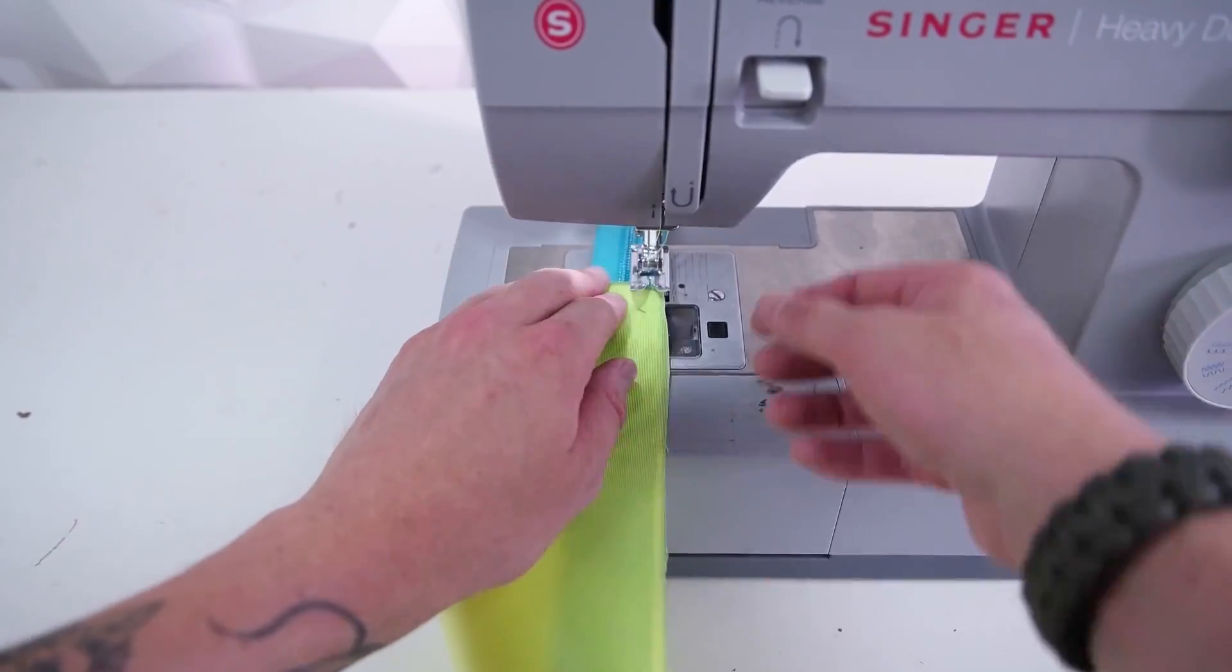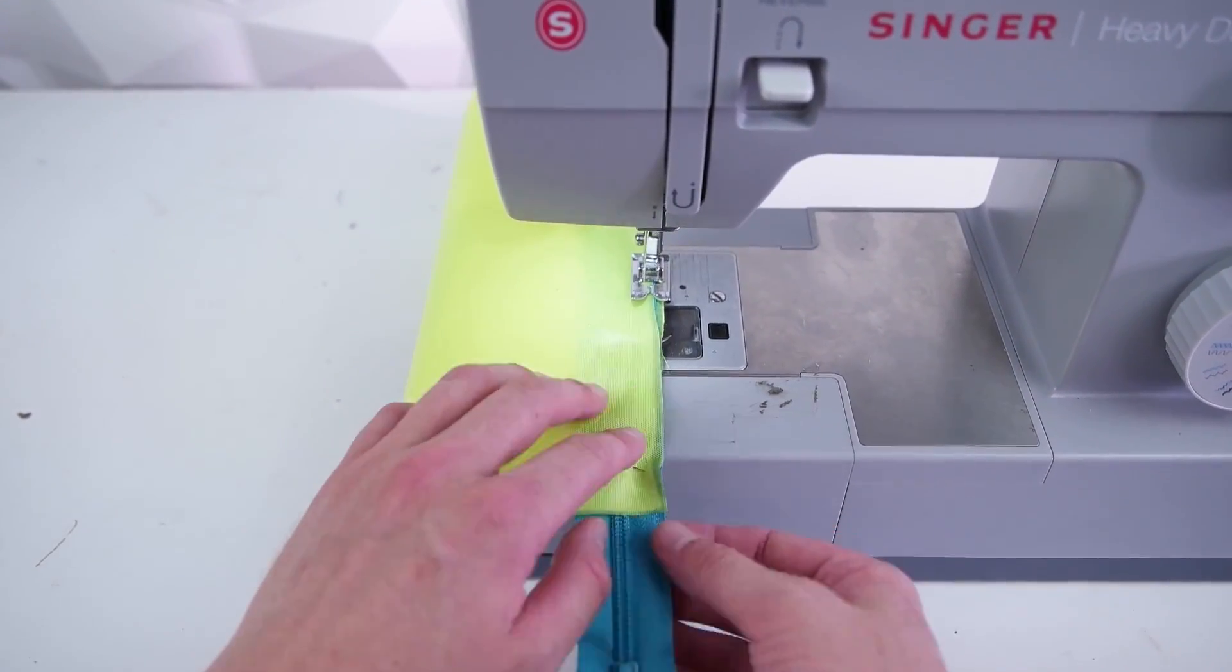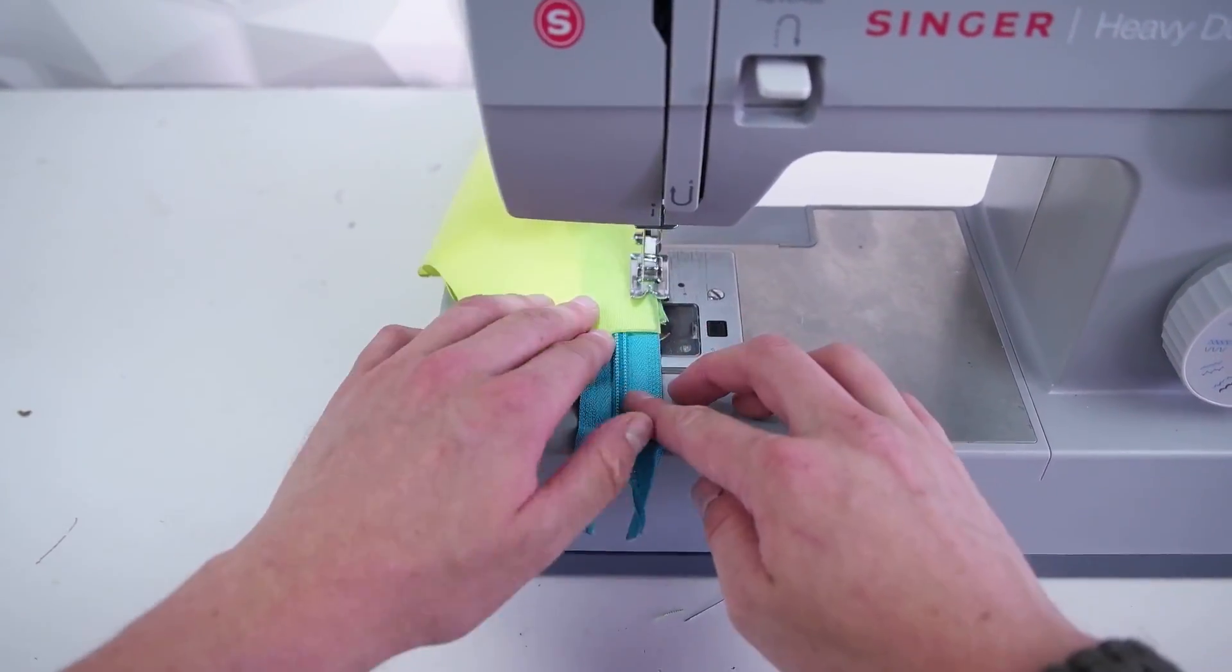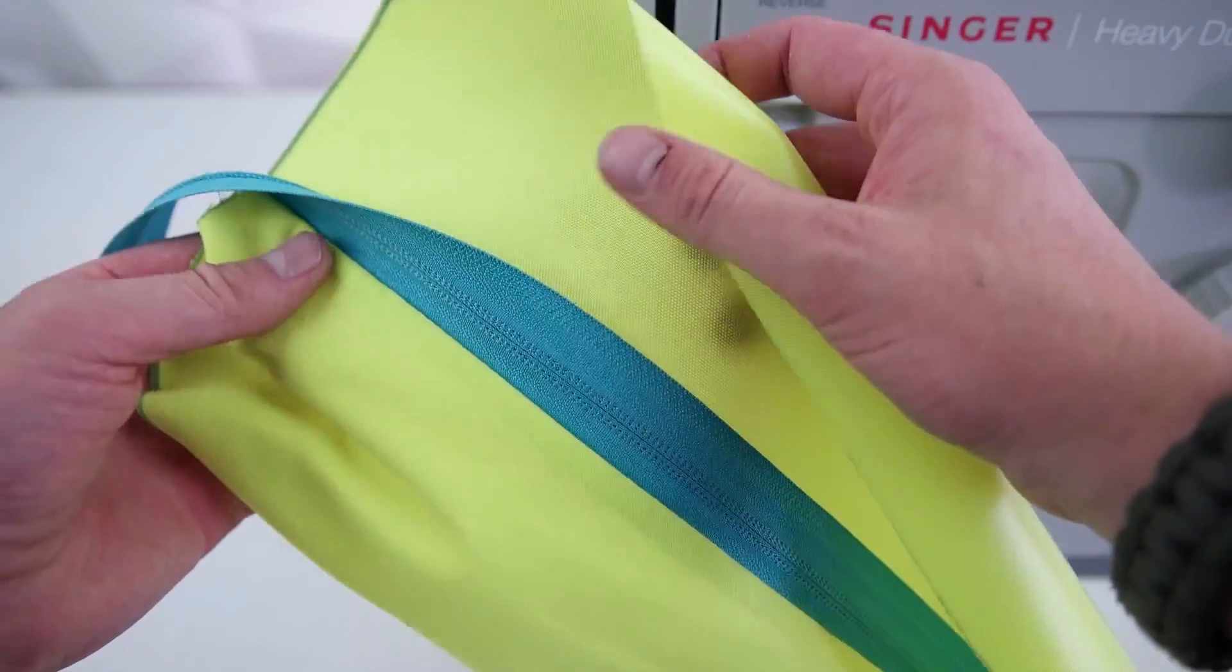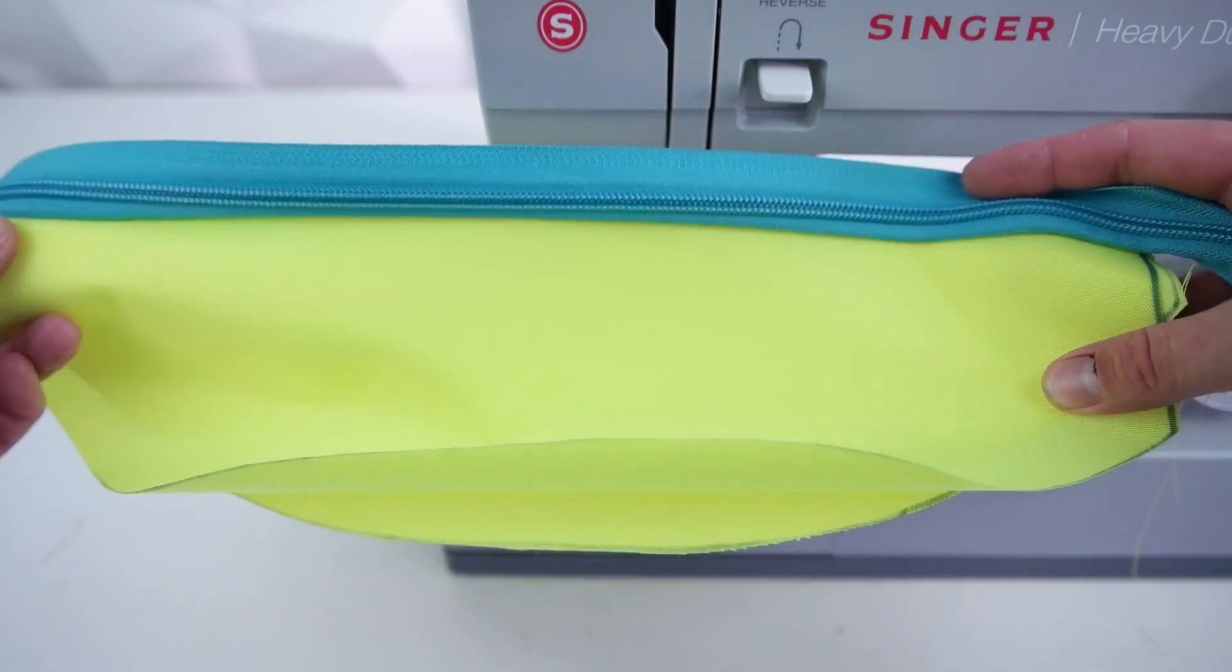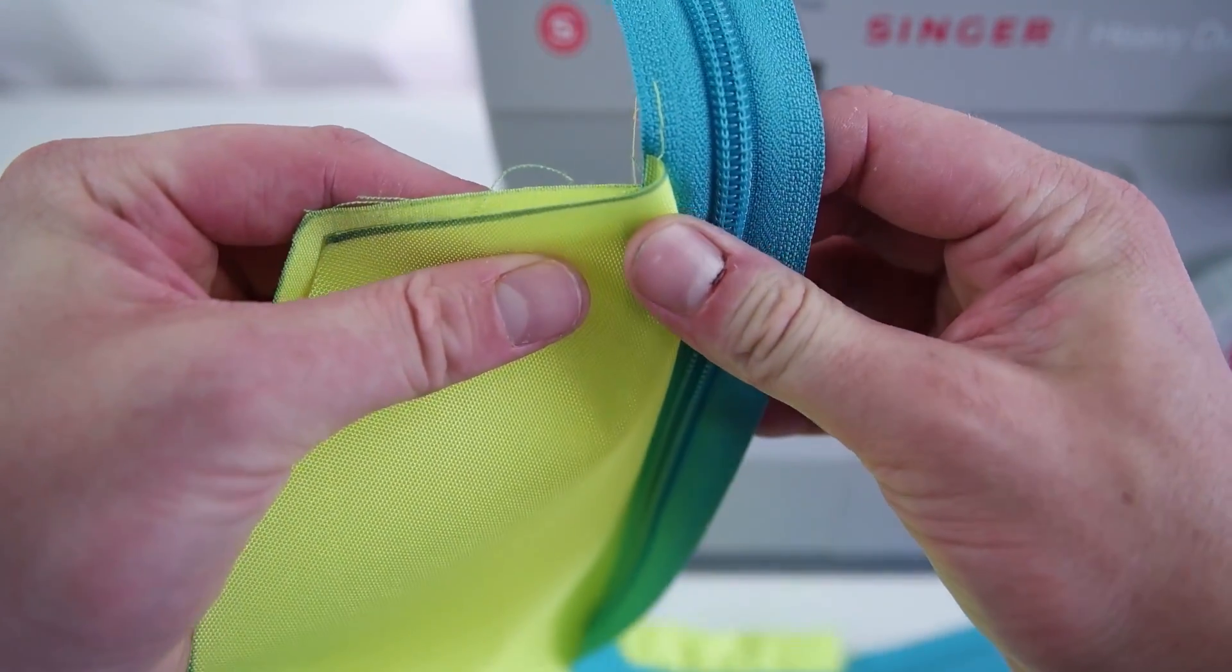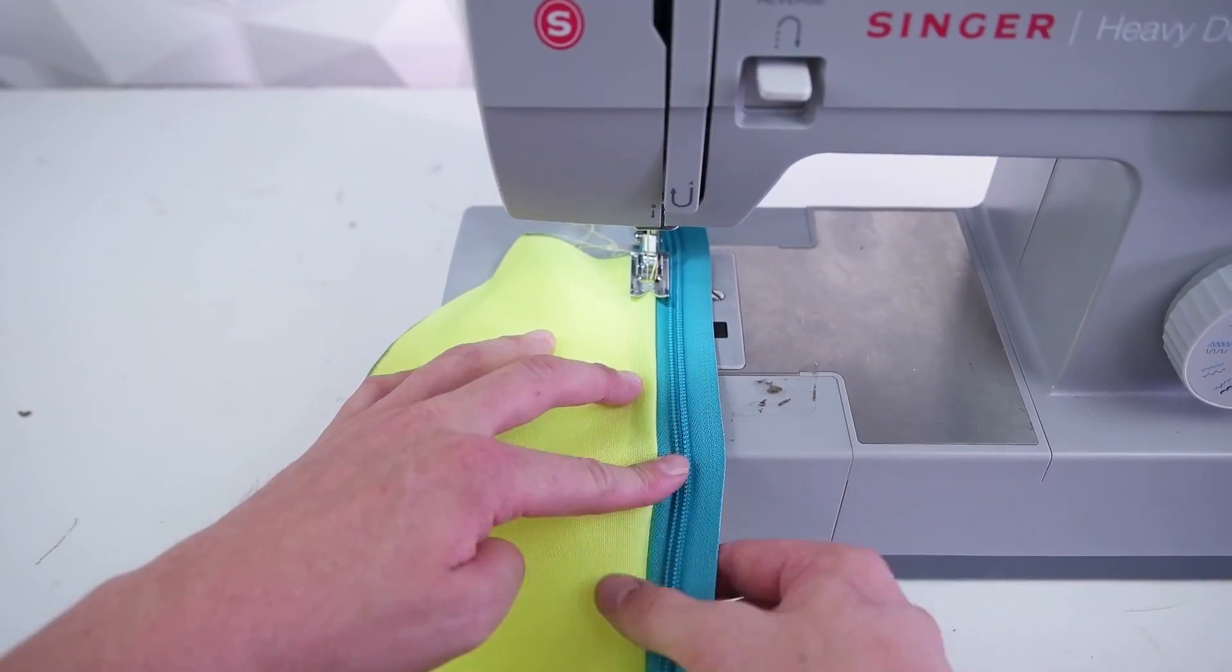Take it to your sewing machine and stitch across that edge. Fold both the front and the back down and do a top stitch all the way across that top edge.